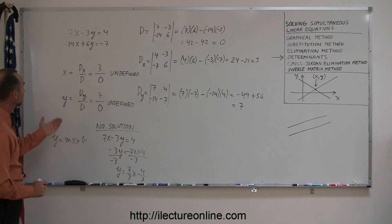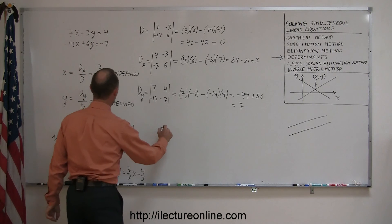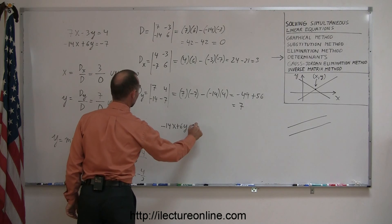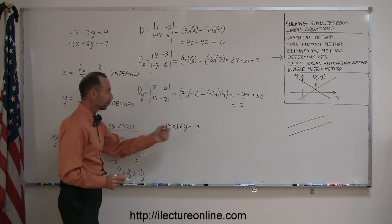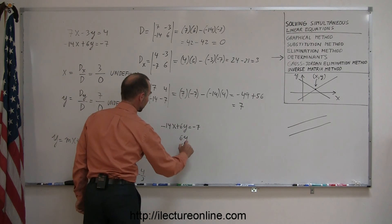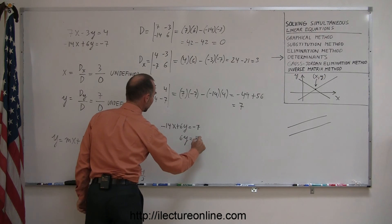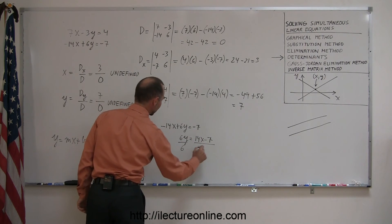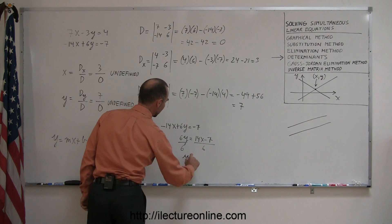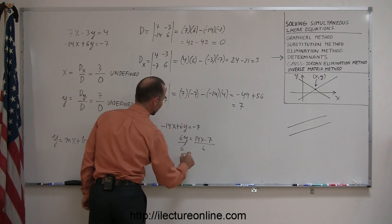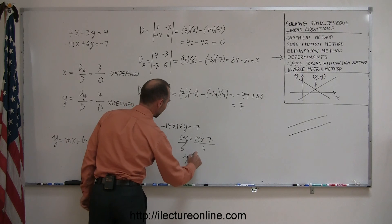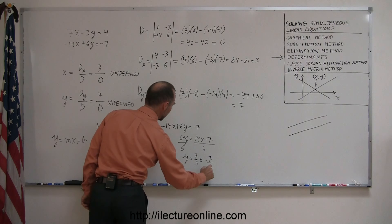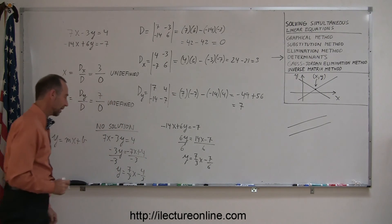We do the same with the second equation. So, we have minus 14x plus 6y equals negative 7. Move the negative 14x across, so we get 6y equals positive 14x minus 7. Then divide both sides by 6. So, we get y equals 14 divided by 6 is 7 over 3x, and minus 7 over 6.